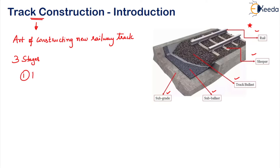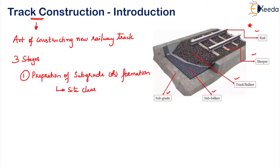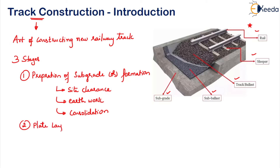The first stage is the preparation of the subgrade, also called formation. This involves site clearance, earthwork excavation or cutting, and consolidation. The second step is plate laying, done for laying a new railway track. The third step is ballasting, which is done for laying ballast on the track. These are the three major stages of construction of a new railway track.